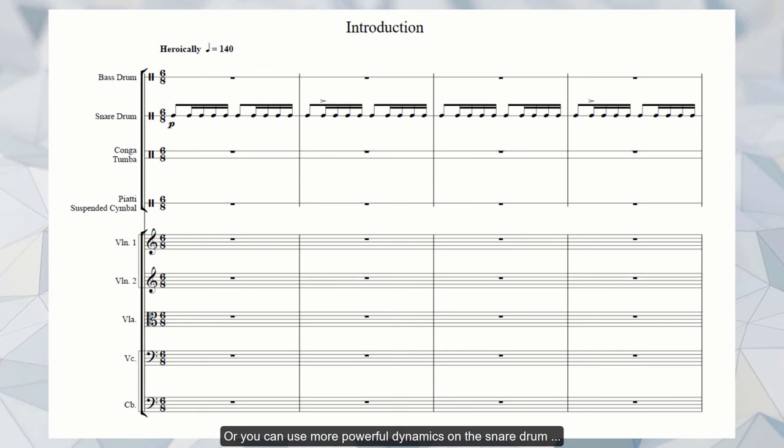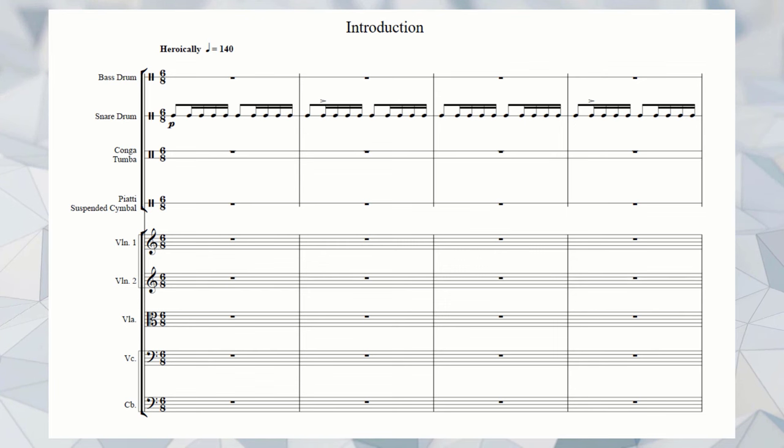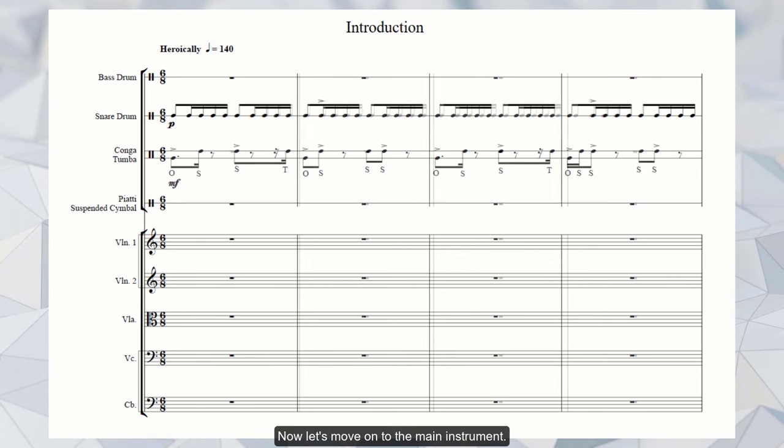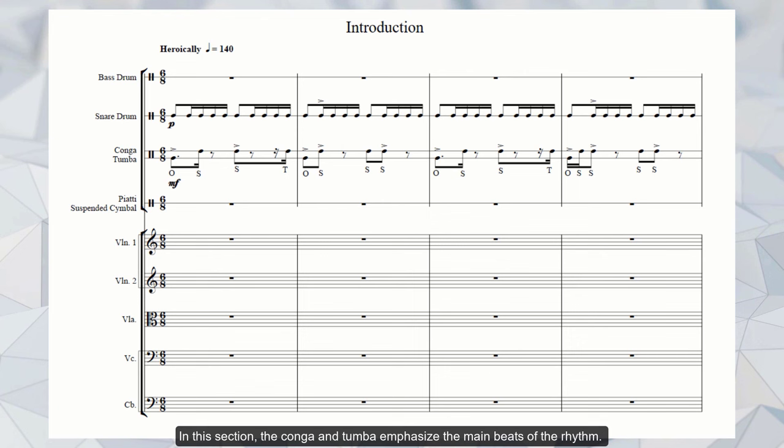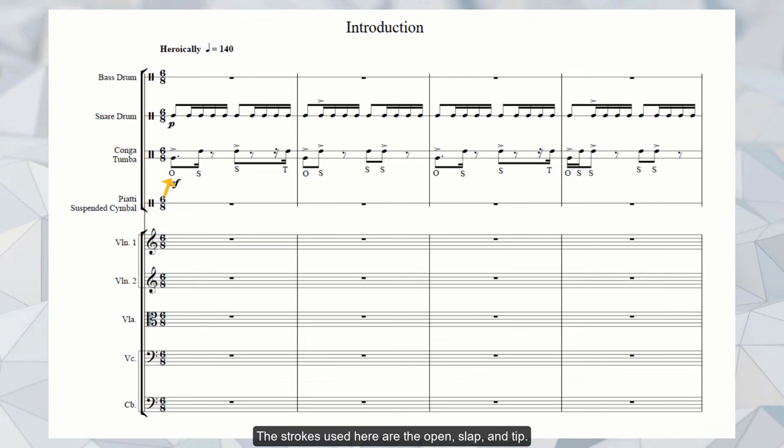Or you can use more powerful dynamics on the snare drum if you are not going to add other drums. Now let's move on to the main instrument. In this section, the conga and the tumba emphasize the main beats of the rhythm. They will be more complex later. The strokes used here are the open, slab and tip. Let's listen to them all together.